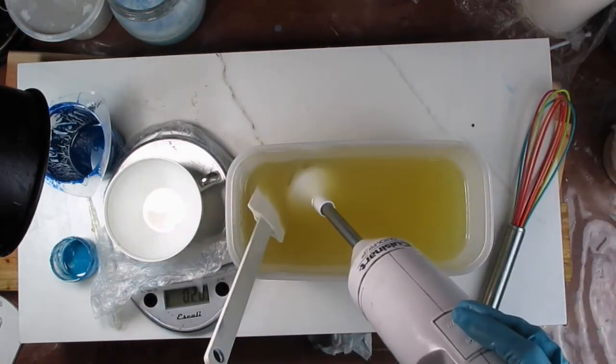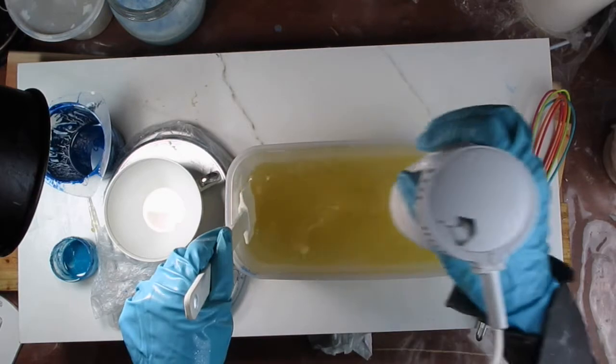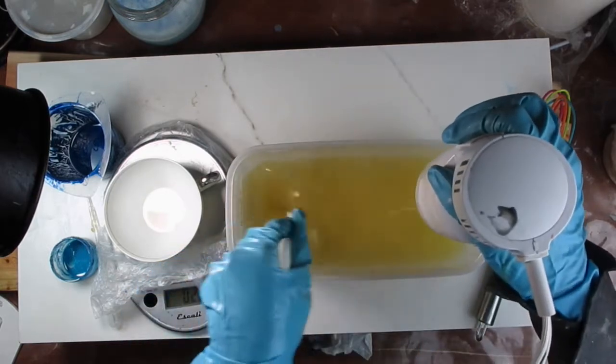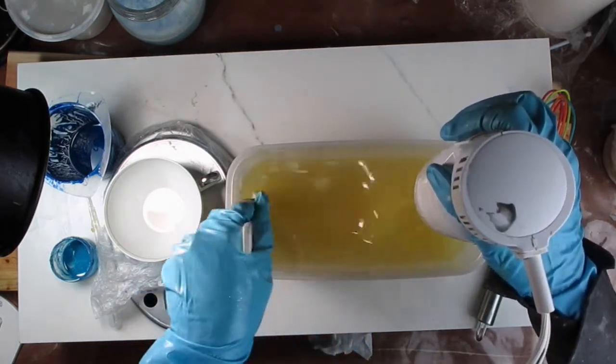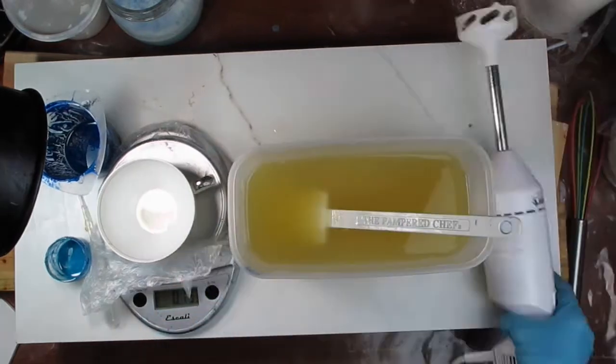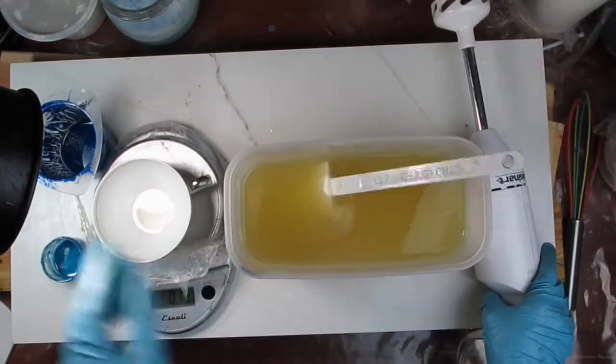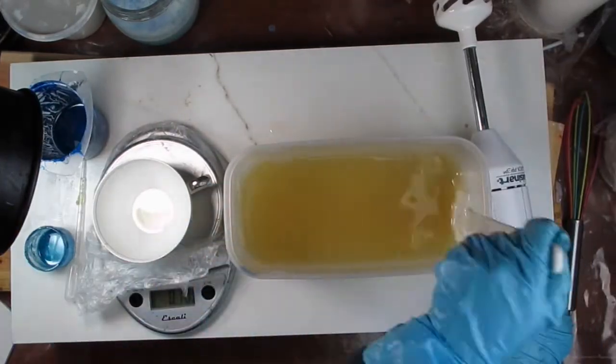I want to bring the soap to emulsion phase so I'm first stirring with a spatula for about 30 seconds. Then I'm going to use this stick blender and I'm going to use it for no more than 10 seconds in low speed.